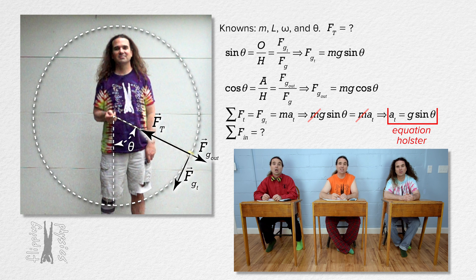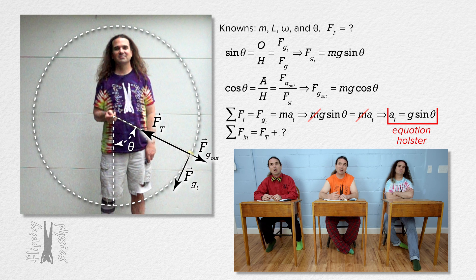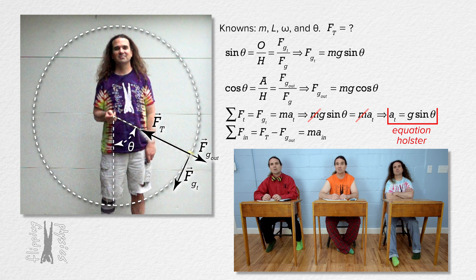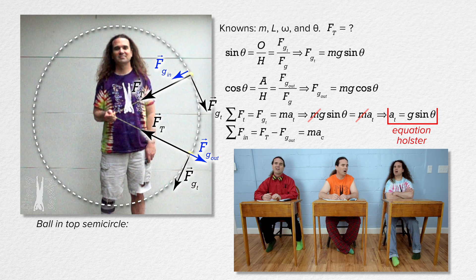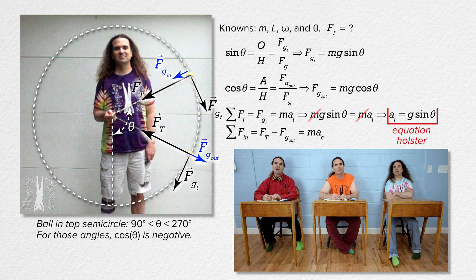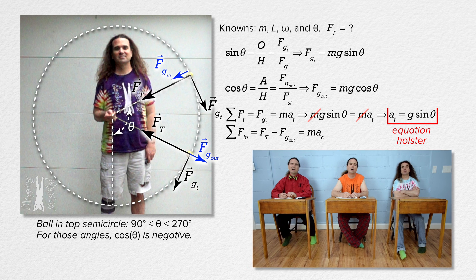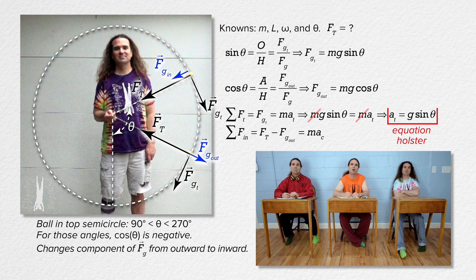Now we sum the forces in the in-direction. Net force in the in-direction equals force of tension — positive because forces acting inward are positive — minus the outward force of gravity component, because forces acting outward are negative. All that equals mass times centripetal acceleration. The force of gravity component which acts outward in the bottom semicircle of the path acts inward instead when the ball is in the top semicircle. When the ball is in the top semicircle, theta is between 90 and 270 degrees, and the cosine of an angle between 90 and 270 degrees is negative, which changes the direction of the force from outward to inward, and the equations still work.